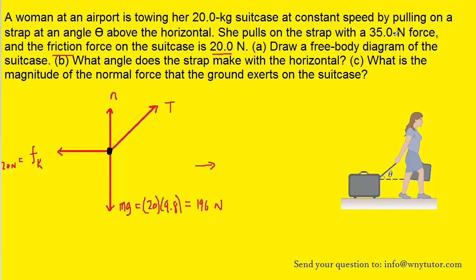And then the question mentions she's pulling on the strap with a 35 Newton force, so we can actually label that 35 Newtons. The normal force is unknown at this point, so we'll just have to leave that as N. And that would complete part A of this question.